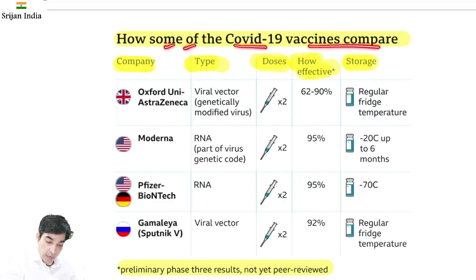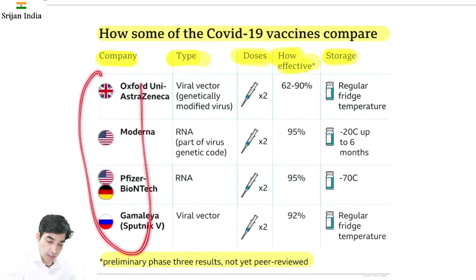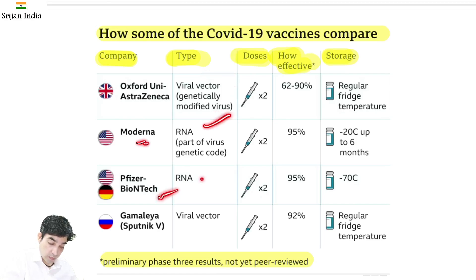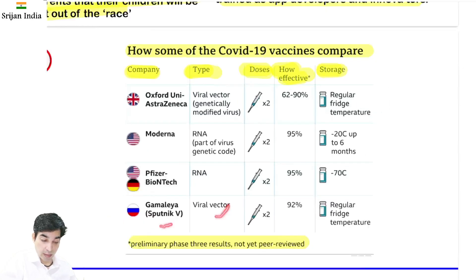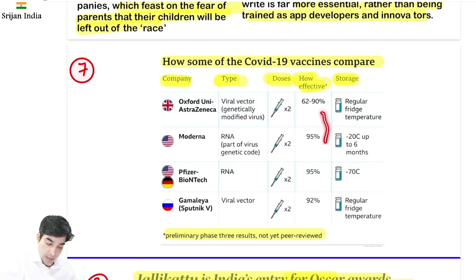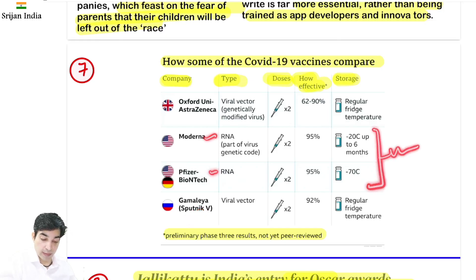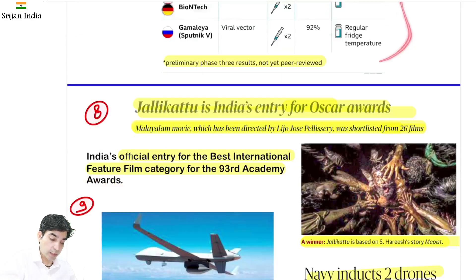How some COVID-19 vaccines compare — in tabular format: Oxford University's viral vector vaccine — genetically modified virus to bring immunity; Moderna's RNA vaccine; Pfizer-BioNTech's RNA vaccine; Sputnik V's viral vector vaccine. All require two doses. Oxford aur Sputnik V ko regular bridge temperature chahiye — Moderna aur Pfizer ke liye ultra-cold storage chahiye, jo logistics ke liye bahut expensive hoga. These are in preliminary/trial phase — let's see.